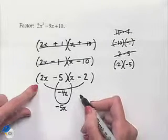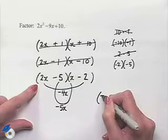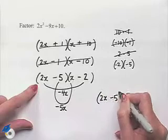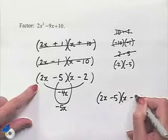So the correct factorization for this problem is 2x minus 5 times x minus 2.